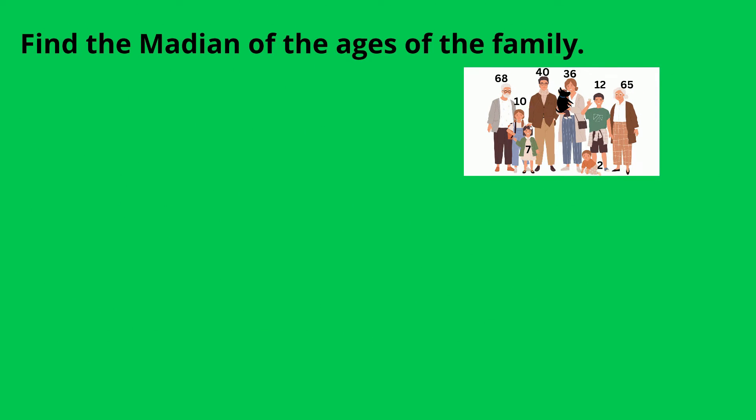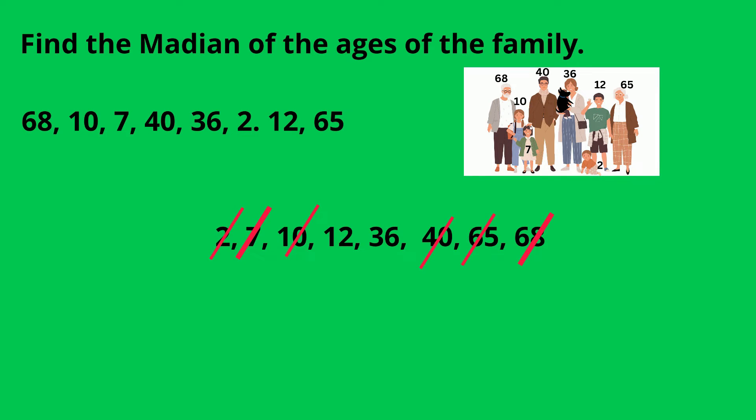So let's find the median of the ages of the family. Here are the numbers, and we're going to arrange them from least to greatest. We're going to mark off the numbers at the same time, and since we have an even number, we need to take the average of the two numbers in the middle. So the mean or average of 12 and 36 is 48 divided by 2, which equals 24. If you have an odd number, it would be just the number in the middle.